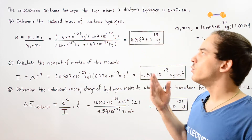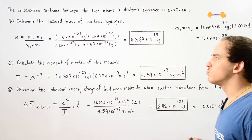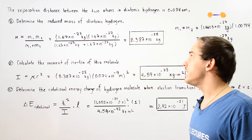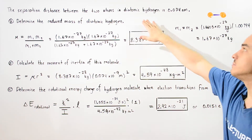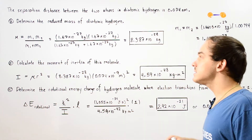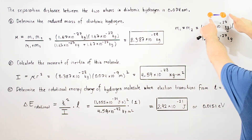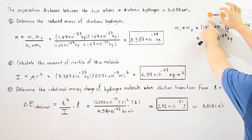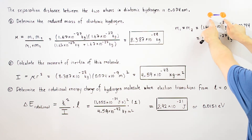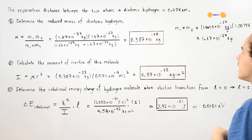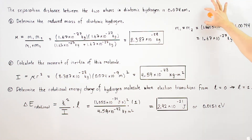Let's look at the following example. Suppose the separation distance between two identical atoms in the diatomic hydrogen molecule is given to be 0.074 nanometers. We have a diatomic molecule with two identical H atoms, and the separation distance between their center of mass is given by this quantity.